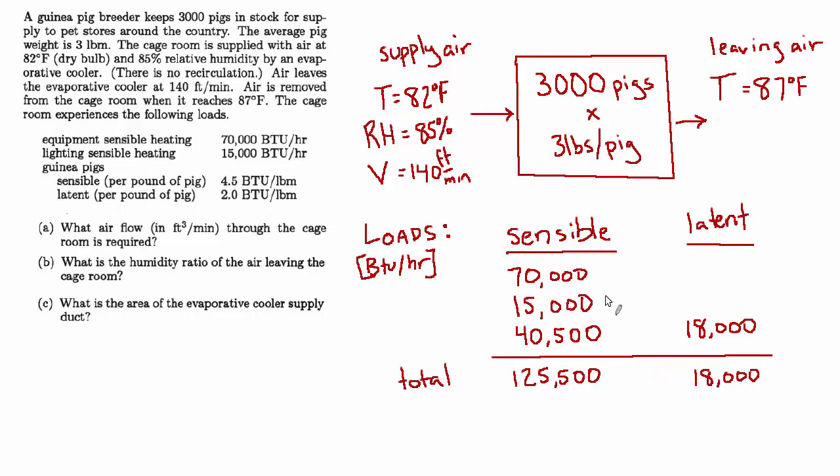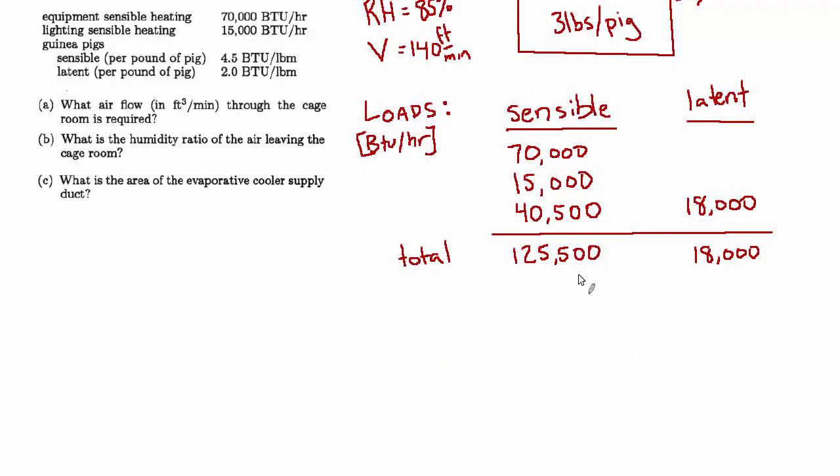So the supply air volume is based only on the sensible load. Because the air is not being returned, we have no desire to control the humidity. We're just going to allow that latent load to be added to the air, and then the air leaves, and the humidity leaves with it, and new air is supplied at these predefined conditions from some evaporative cooler. So for the supply air volume, we'll use our handy rule of thumb.